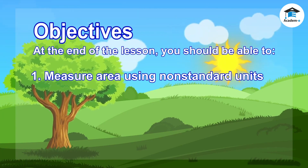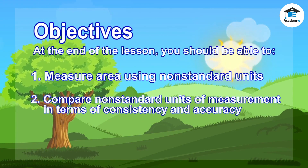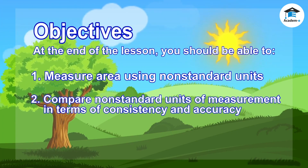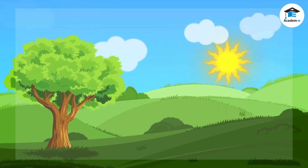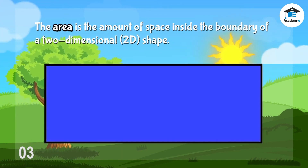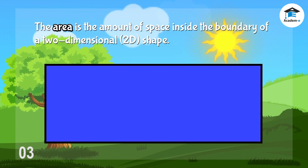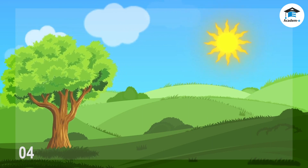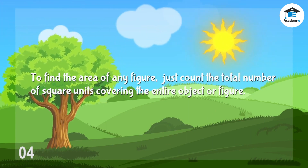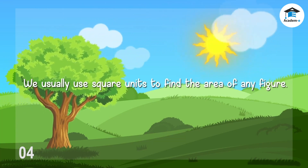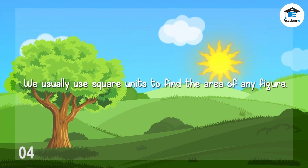Measure area using non-standard units, and compare non-standard units of measurement in terms of consistency and accuracy. The area is the amount of space inside the boundary of a two-dimensional shape. To find the area of any figure, just count the total number of square units covering the entire object or figure. We usually use square units to find the area of any figure.